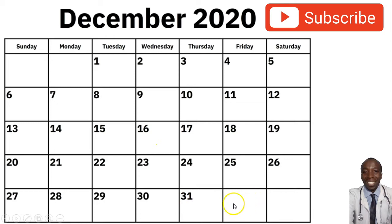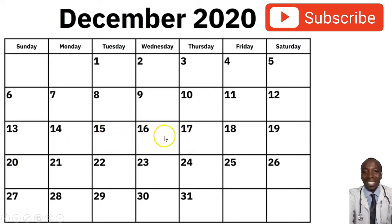To calculate your fertile days, simply begin from the first day you saw your periods, count up to the 14th day, and then on the 14th day count three days backwards and three days forward. Those three plus three days — along with the 14th day itself — form what we call your fertile window, the time you are most likely to get pregnant.